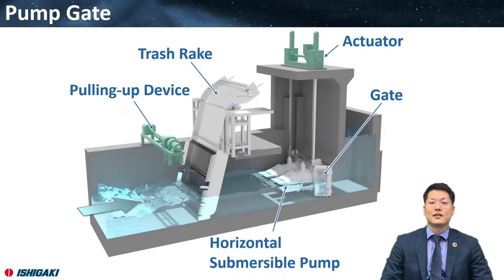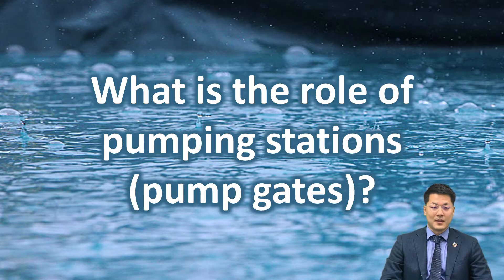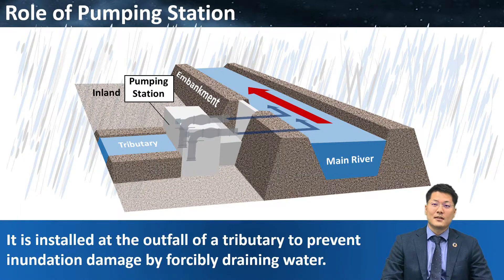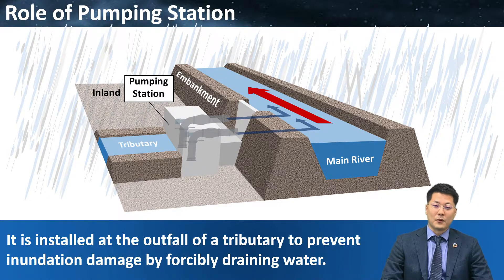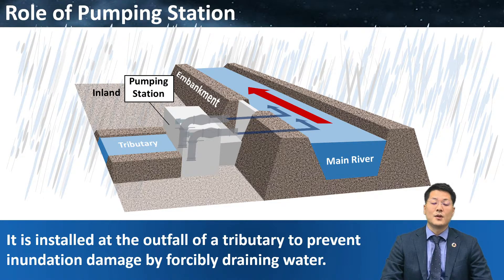A pump gate is a drainage system with an integrated pump and gate. What is the role of pumping stations and pump gates? A pump gate is a type of pumping station. It is installed at the outfall of the tributary to prevent inundation damage by forcibly draining rainwater when the water level rises in rainy weather.